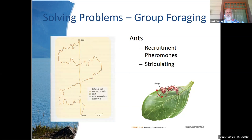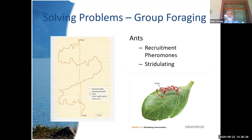Ants, on the other hand, use recruitment pheromones. Ants don't fly, so pheromones work out well. As they find food and head back to the nest, they release chemicals, leaving a trail to the food. As more and more ants travel across it, that trail gets stronger and stronger. If you've ever done this as kids — you can take your hand and wipe it right through an ant trail, and you'll see scattering when they hit it because you've disrupted the pheromone.